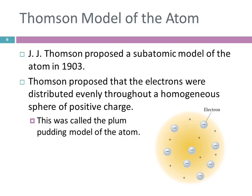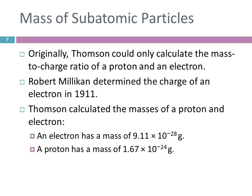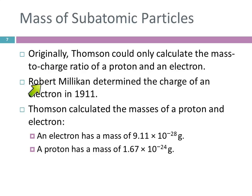Nobody else had any better ideas, so they went with that. When they first discovered the electron and the proton, all they could do was calculate the mass-to-charge ratio. They couldn't actually find the actual charge or the actual mass. In 1911, Robert Millikan had an experiment that allowed him to determine the charge on the electron, and from that mass-to-charge ratio, they could calculate the masses of these particles.